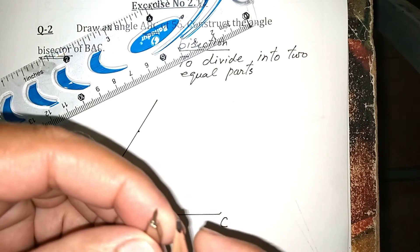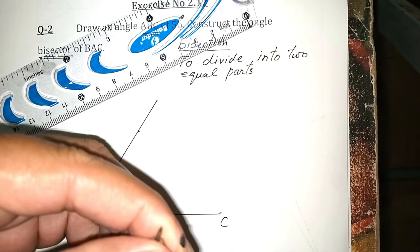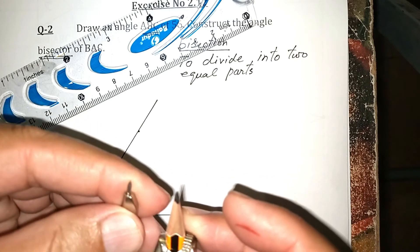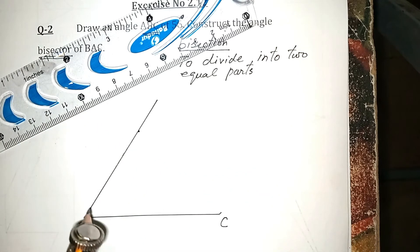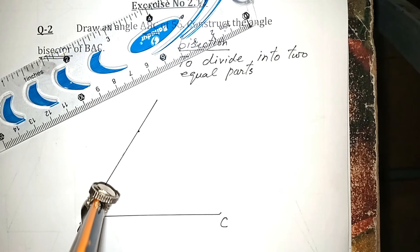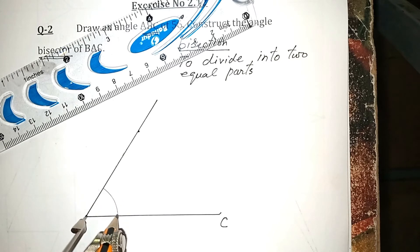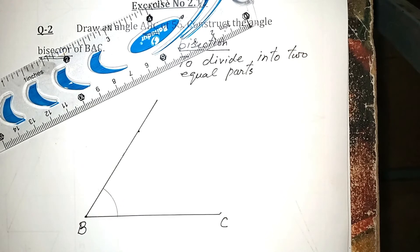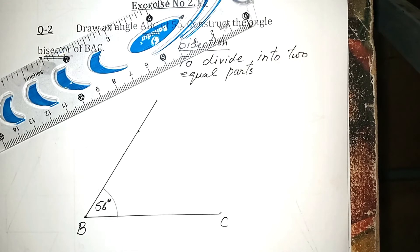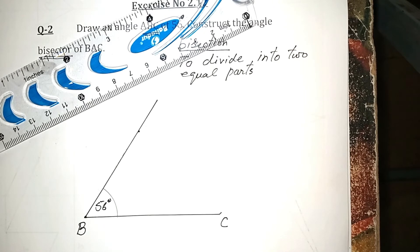Now take the compass and open it to your own choice. It will be like this. From B, make an arc like this, from here to here. This angle is 56 degrees and we are going to make the bisection of this angle.